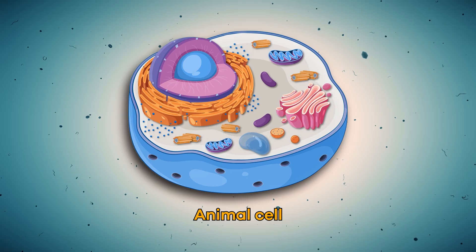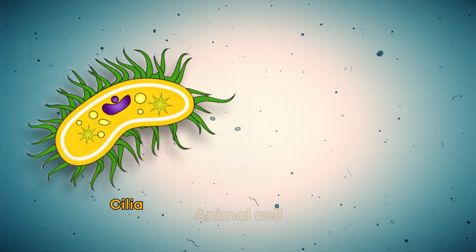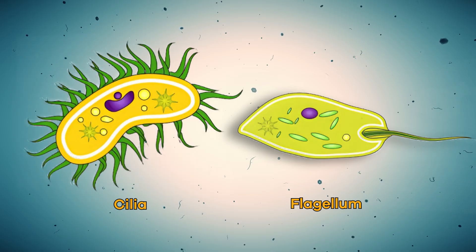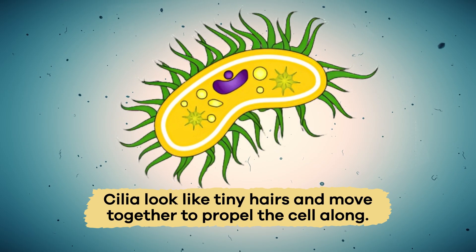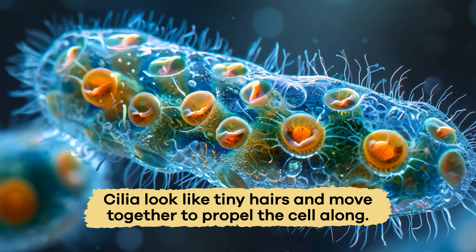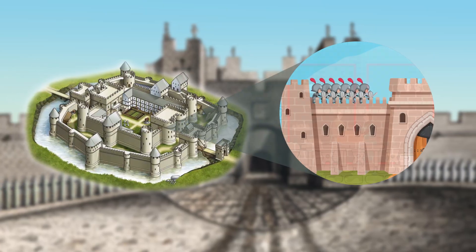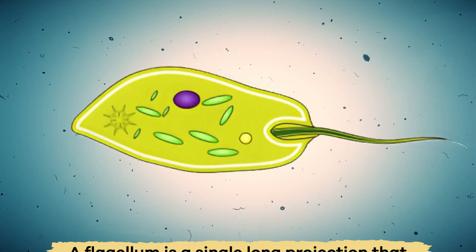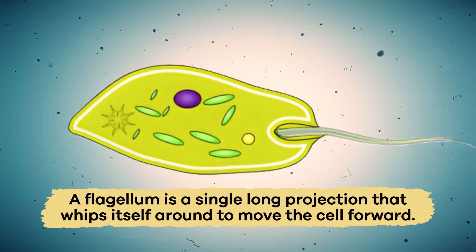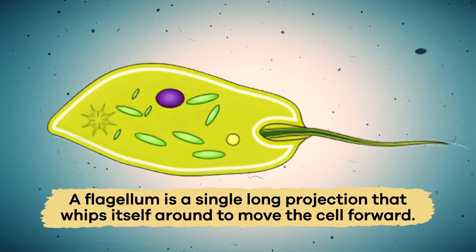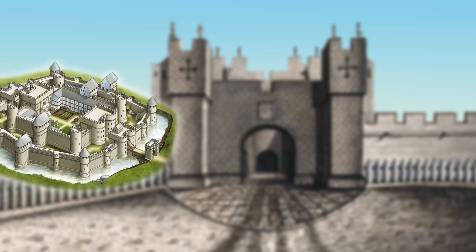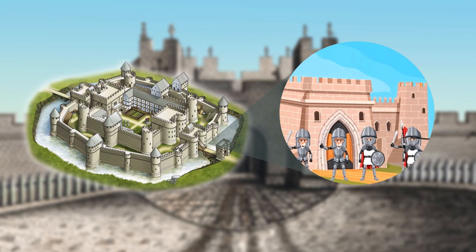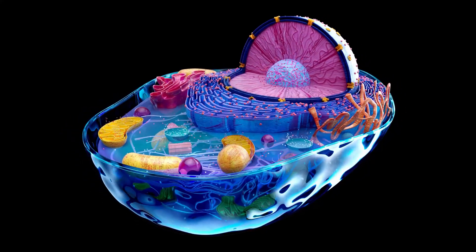Animal cells have some differences, too. They have cilia, or flagellum, on the outside of the cell that helps them to move. Cilia look like tiny hairs and move together to propel the cell along, like small rapidly moving guards patrolling the castle walls. A flagellum, on the other hand, is a single long projection that whips itself around to move the cell forward, similar to a few powerful guards patrolling a castle's outer borders. Animal cells can have either one, but not both.